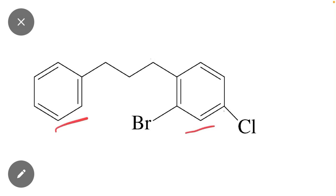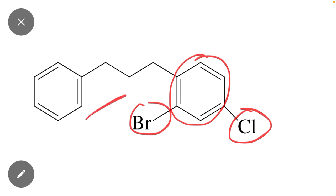You can see that there are two benzene rings, but we will select that benzene ring which contains the maximum number of substituents. If we select this ring, then it contains one, two, and three substituents. That is why we will select this ring.